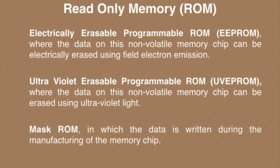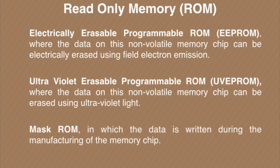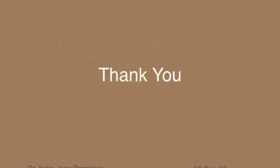Based on the method of erasing, EPROM is categorized into Electrically Erasable Programmable ROM (EEPROM or WPROM) and Ultraviolet Erasable Programmable ROM (UV EPROM). In WPROM, data is electrically erased using field electron emission. In UV EPROM, data is erased using ultraviolet light. ROMs used for predefined functions within a computer are known as Mask Programmable ROM or Mask ROM, where data is written during the manufacturing of the memory chip.